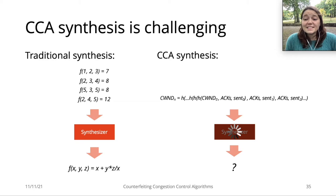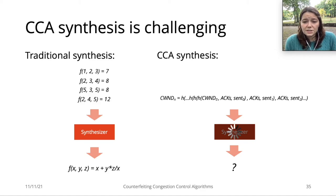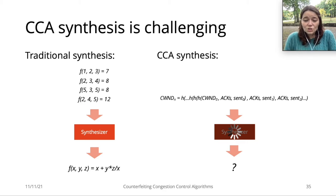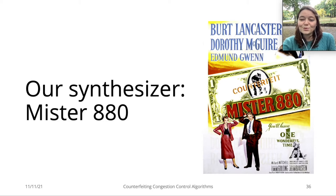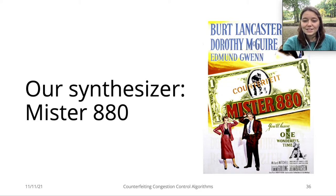In summary, CCA synthesis is more complex than the simple example with the F function. If you tried to use existing techniques to synthesize a CCA, it will likely run forever and never return an answer. However, we found ways to overcome these challenges. We implemented our ideas on a prototype CCA synthesizer called Mr. 880. It's named after a movie about a money counterfeiter that only ever counterfeited one-dollar bills. Our first goal is to synthesize the simplified version of RENO, so we say RENO is our one-dollar bill.